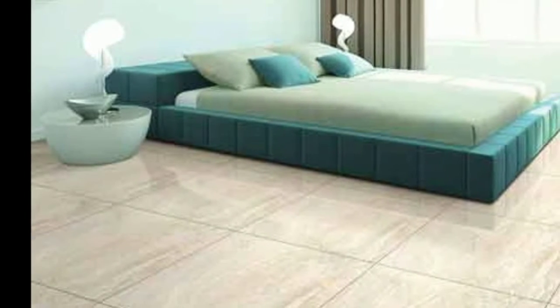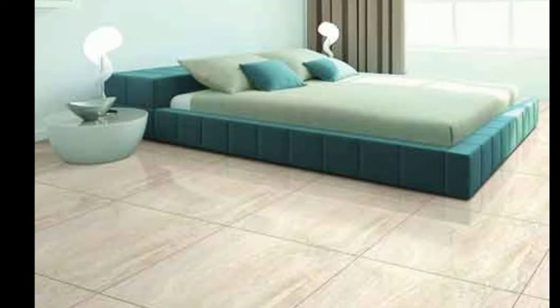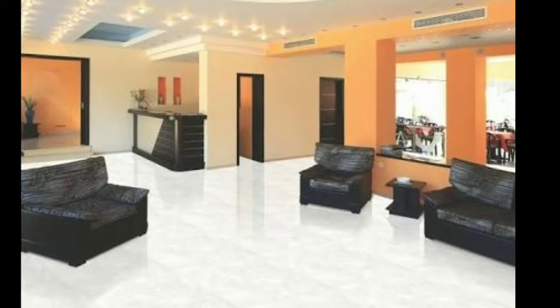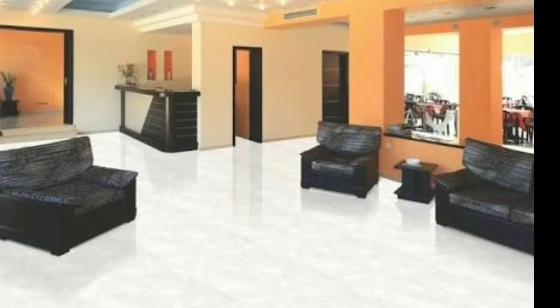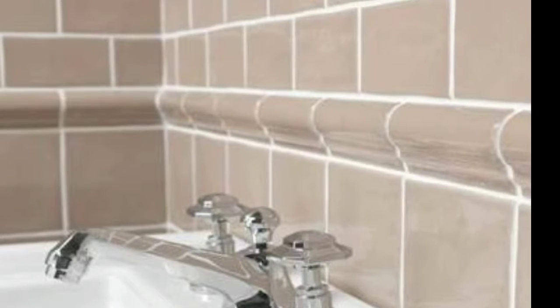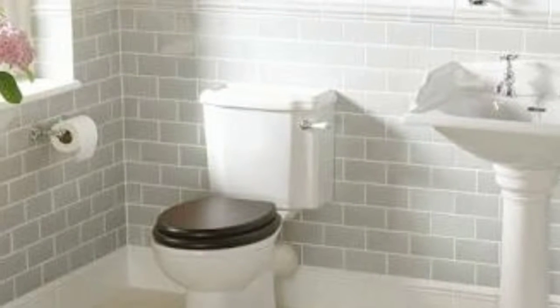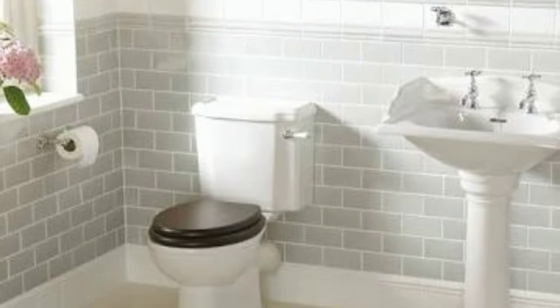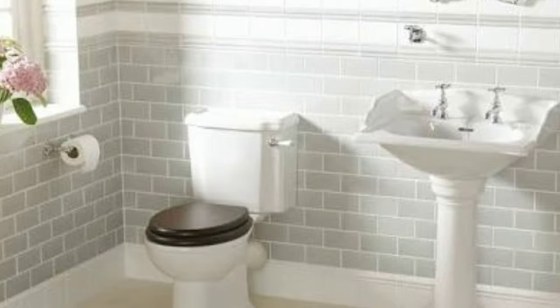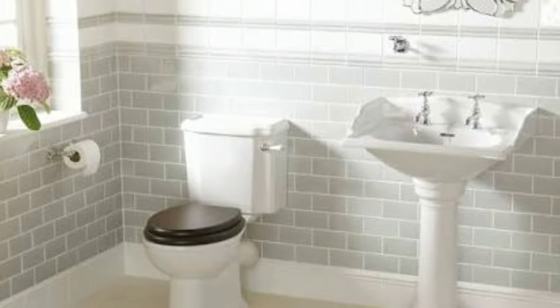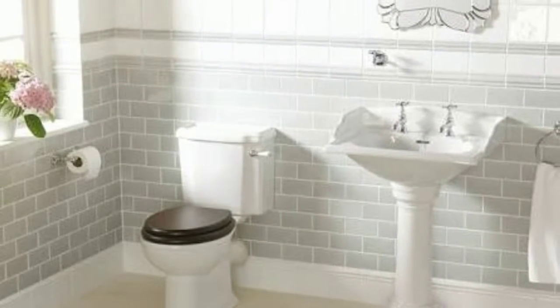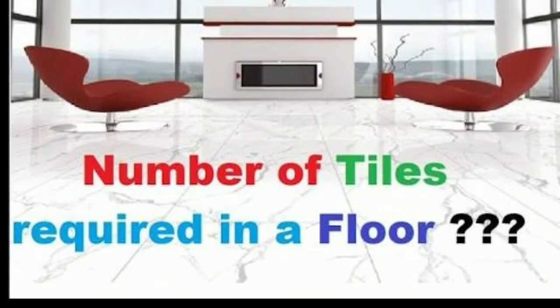Vitrified tiles are those tiles used on the floor — you can see the bed and the floor tiles in the picture, those are vitrified tiles. We also have very big tiles on the floor, and those are also called vitrified tiles. The tiles used on walls are called dado tiles — you can see them in the picture, including a beautiful bathroom wall tile view.